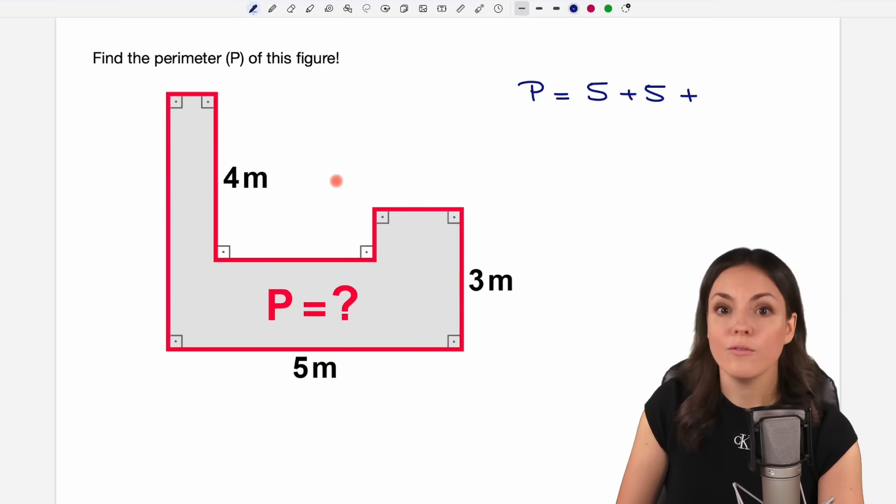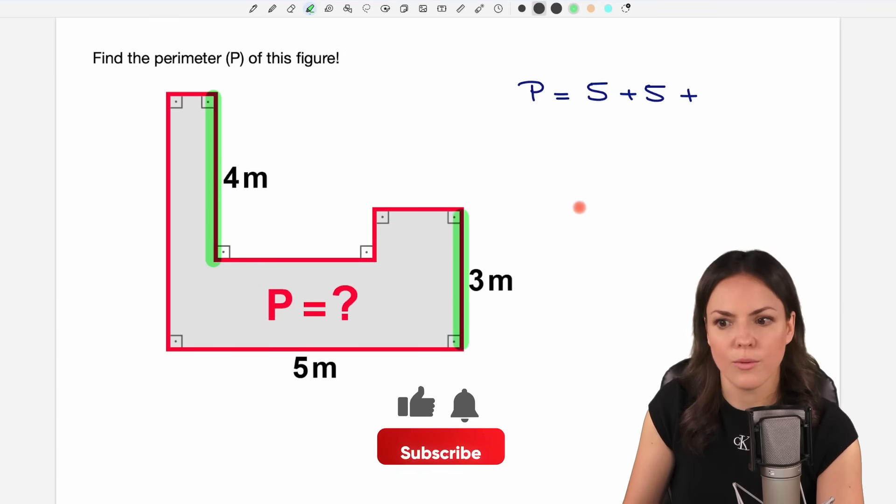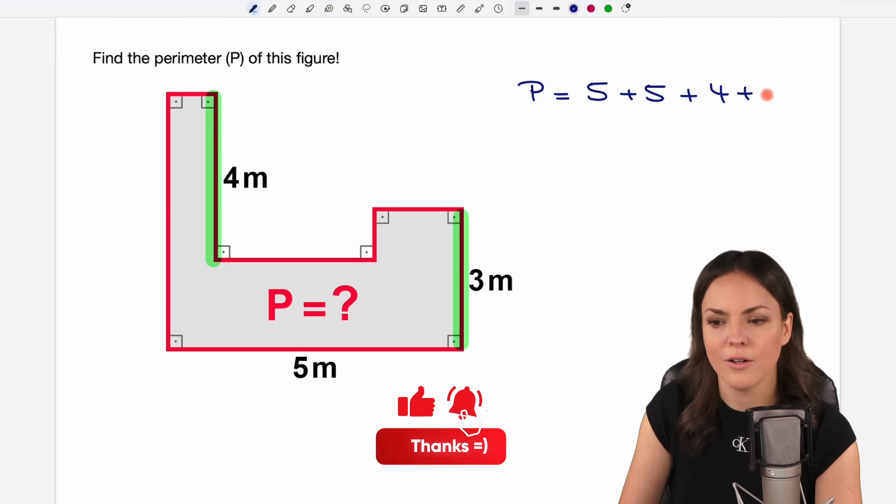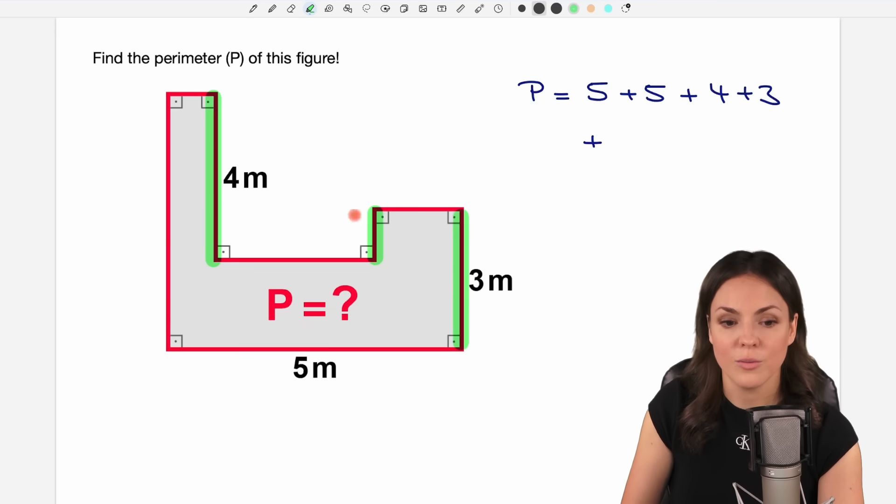So let's take a look at the vertical lines. We have this one and this one. Okay, four and three. We can put this in here already, but there are more. We also have this one and this one.